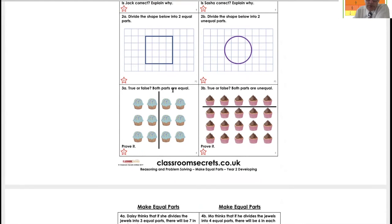True or false? Both parts are equal. Two, four, six here. Two, four, six equal. Six in each side.